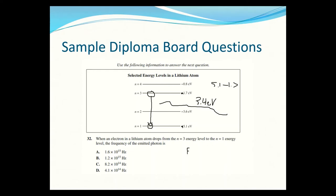All we have to do is use E = hf, then take our energy divided by h. We divide by the electron-volt form of Planck's constant, 4.14 × 10⁻¹⁵ eV·s, and we get 8.2 × 10¹⁴ Hz. So C is the correct answer.